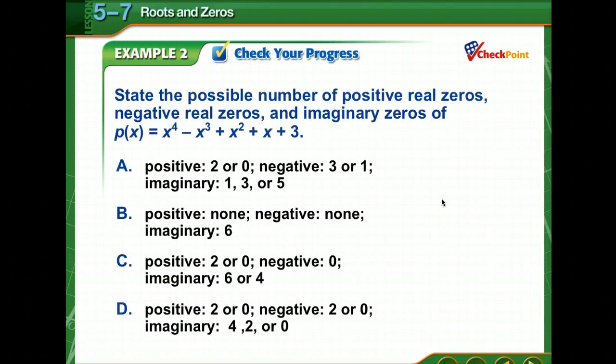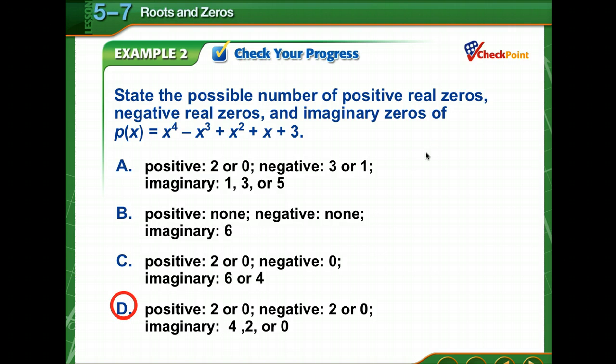Check your progress: solve for p of x and p of negative x and determine how many zeros you're looking for. Pause for a moment and come back and check your answer. For positive, you could have two or zero; for negative, two or zero. So for imaginary, you could either have four, two, or zero.